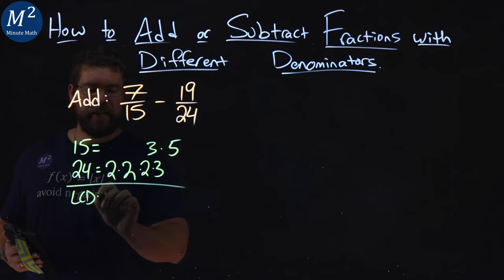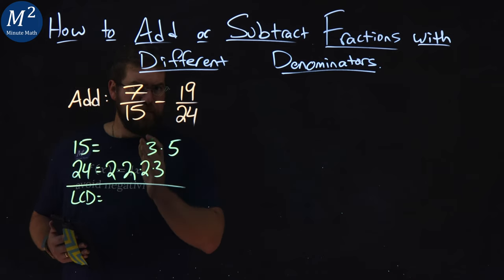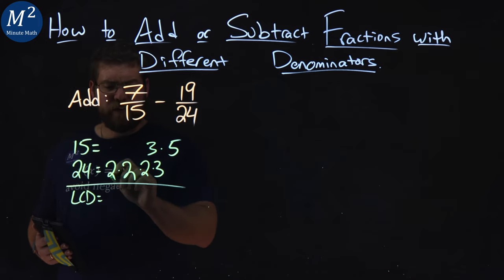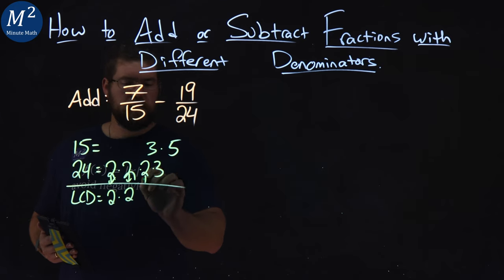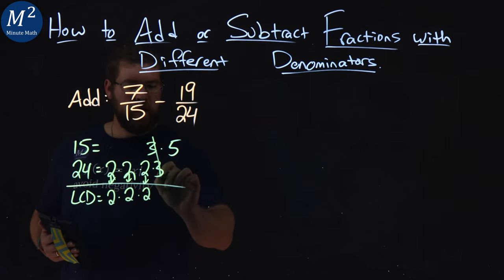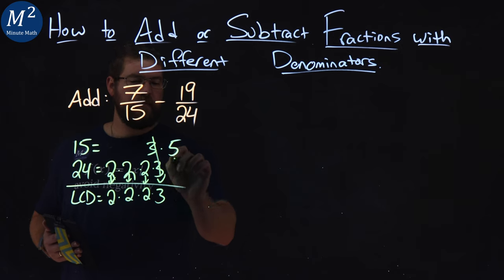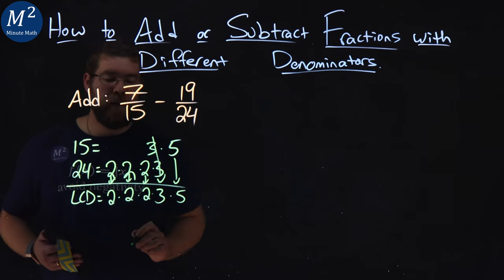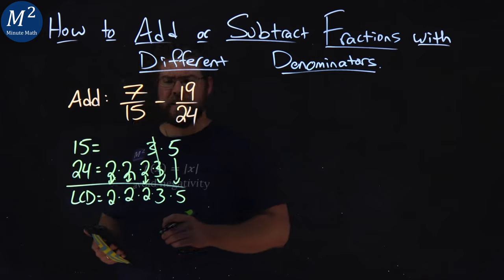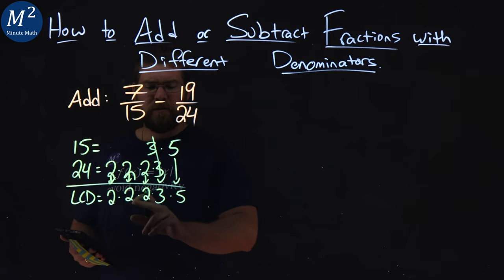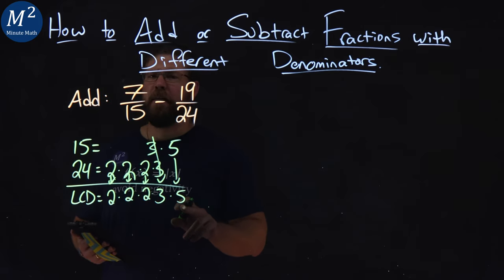So to find the LCD, remember we line up our multiples, our factors: 2 times 2 times 2 times 3 is lined up, times 5. And again, if you need help with this, we have other videos on that topic. 2 times 2 times 2 times 3 times 5, what does that come up to be?